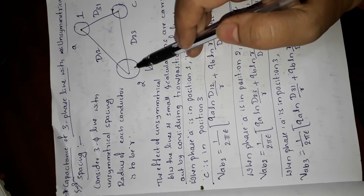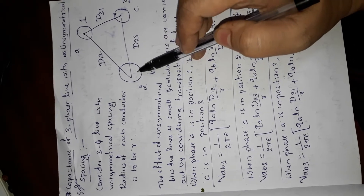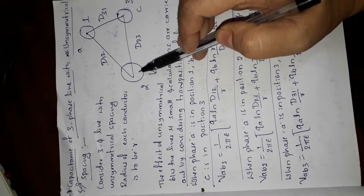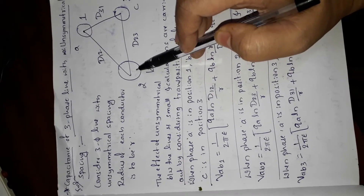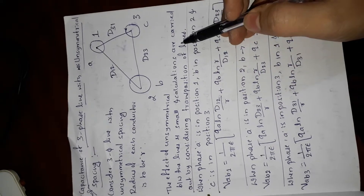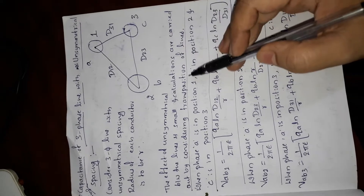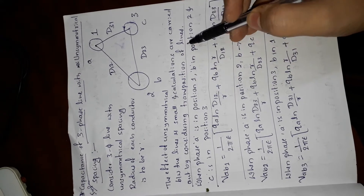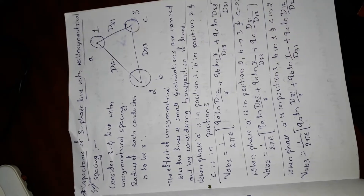The conductor has the radius r. The effect of unsymmetrical spacing between the lines is small, hence the calculations are carried out by considering transposition of the lines.